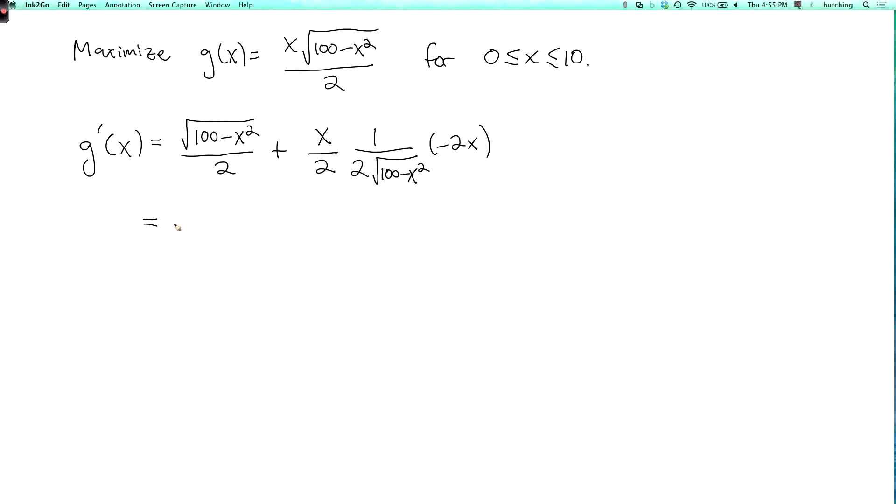So this is square root of 100 minus x squared over 2, minus x squared over 2 square root of 100 minus x squared.